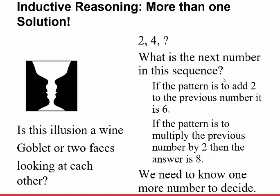With inductive reasoning, be careful — there can be more than one answer. Consider this visual: is it a wine goblet or two faces in silhouette? There are two solutions; it could be both. Similarly, if I have the sequence 2, 4, what is the next number? If the pattern is to add 2, the answer is 6. But if the pattern is to multiply by 2, the answer is 8. We need one more number to decide.